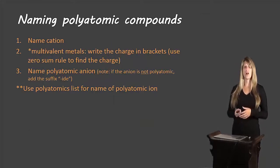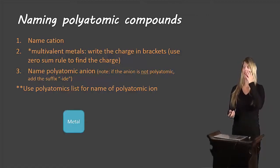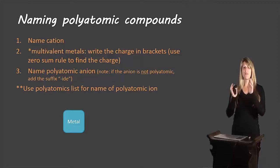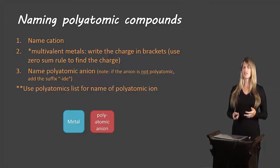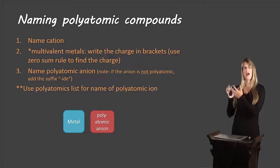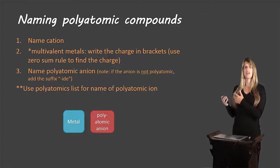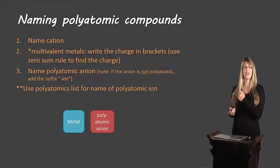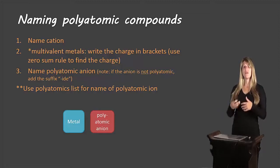Here are the rules for naming polyatomic compounds — you can pause the video and write them down. You're going to start by naming the cation, and if it's a multivalent metal, you'll follow the normal rules by including the charge on that metal in brackets. Then you write the polyatomic anion. The polyatomic anions already have their own special endings, so we don't add -IDE at the end. The only exception is if the polyatomic ion is the first piece and the second piece is a regular anion — then you add -IDE as usual.